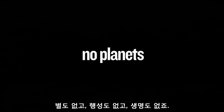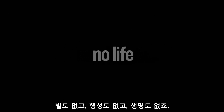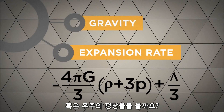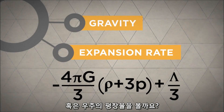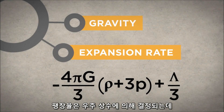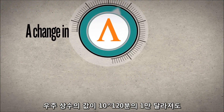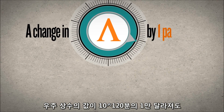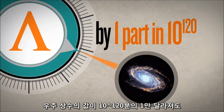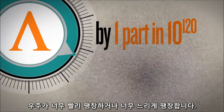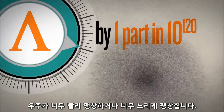Or it would have collapsed back on itself with the same result — no stars, no planets, and no life. Consider the expansion rate of the universe. This is driven by the cosmological constant. A change in its value by a mere 1 part in 10 to the 120th parts would cause the universe to expand too rapidly, or too slowly.